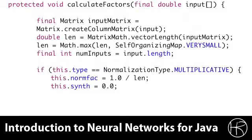The calculateFactors method is the main entry point for the normalization class. This method is used to actually normalize the input. You can see that it takes a double array, which is the input items that you would like normalized. It then creates an input matrix, which is essentially just a column matrix based on the input values that have been specified.